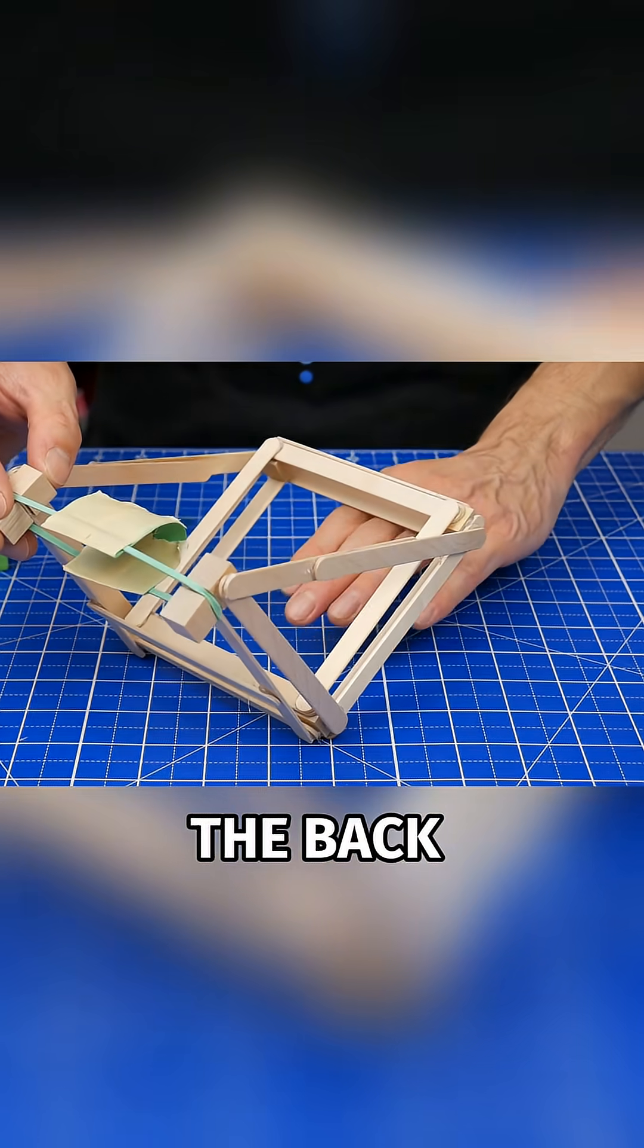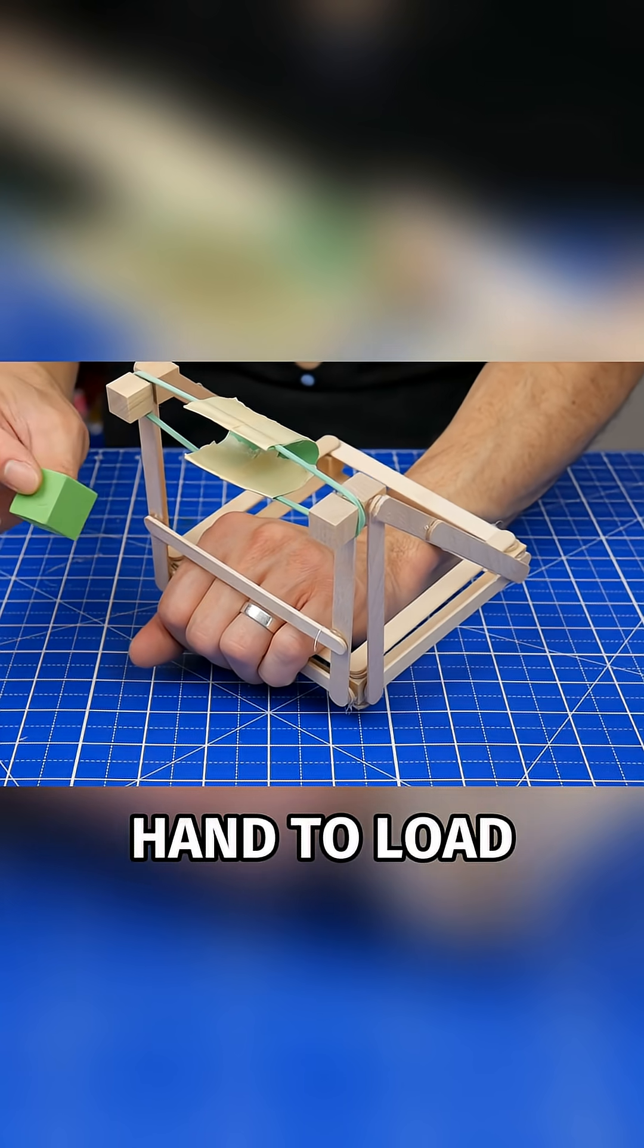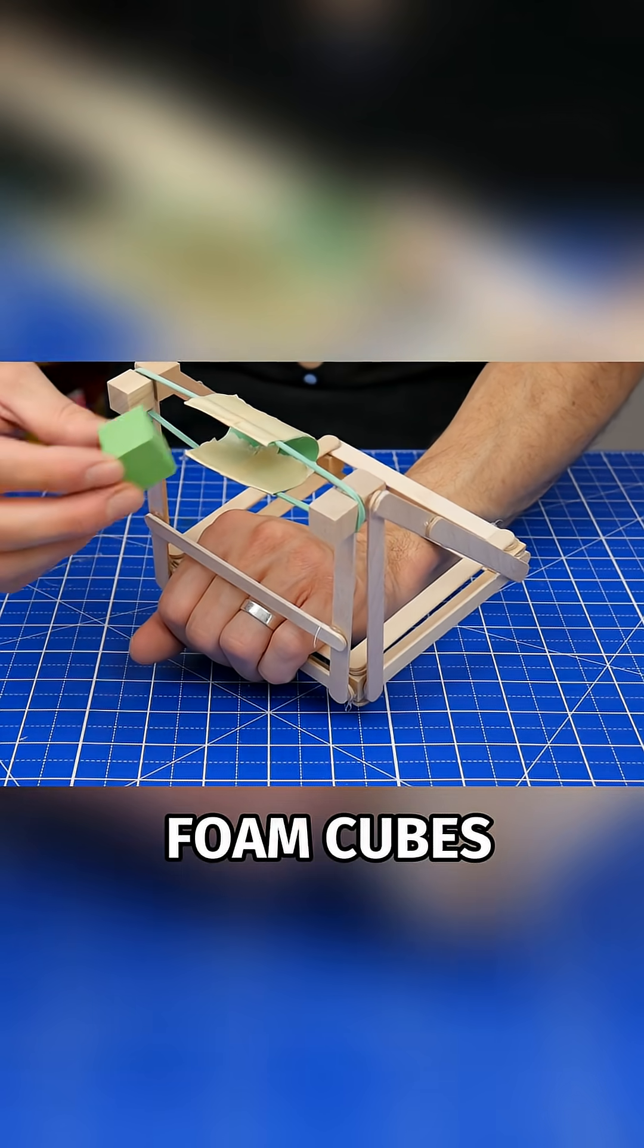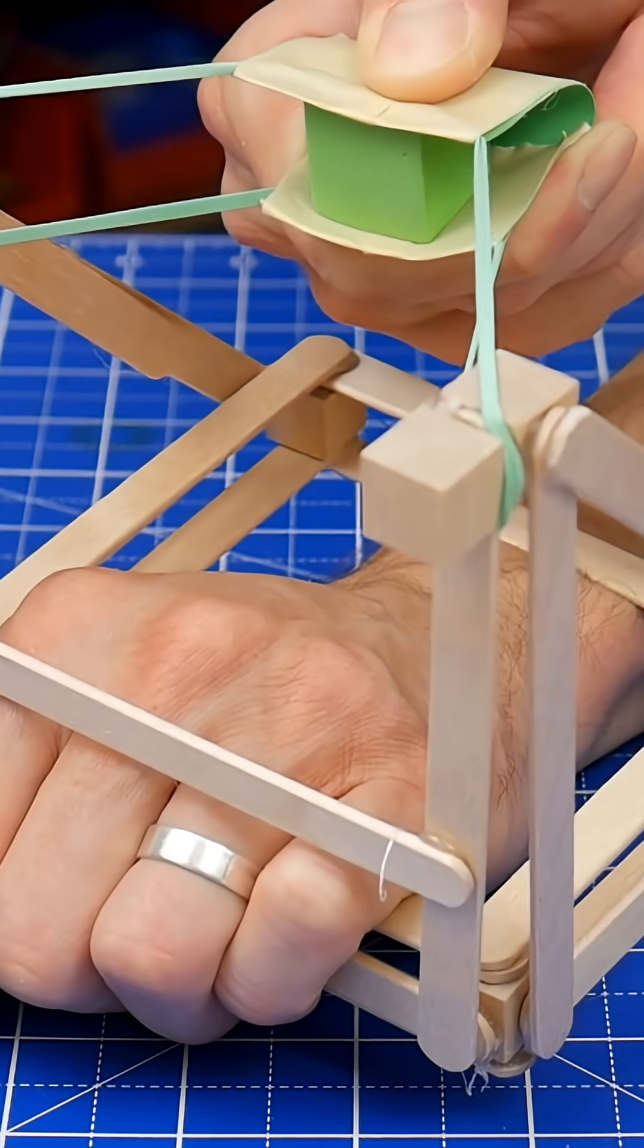Okay, we're ready to fire. Put one hand under the back of the base and then grasp the front of the base. Then use your other hand to load your projectile. I like using these foam cubes. Then pinch the top and bottom of the sling, pull back as much as you want, and let go.